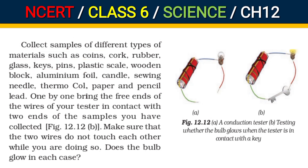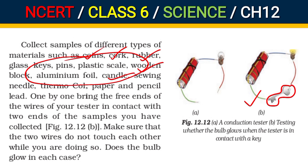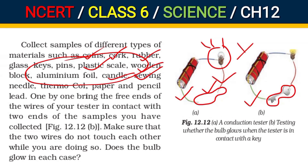For Activity 5, you have to use many material samples such as coin, cork, rubber, wood, candle, or whatever is available, and connect them in the circuit. In the figure B, the key is connected. You have to place the test material in the gap between the two wire ends without touching the wires yourself. After that, observe whether the bulb glows or not.